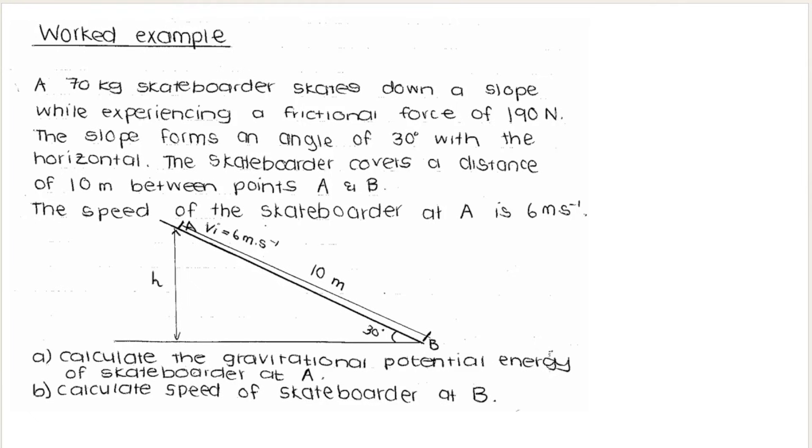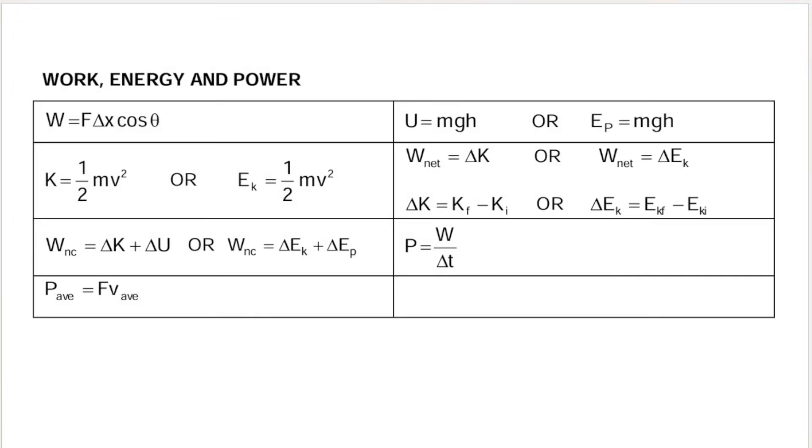Calculate the gravitational potential energy of the skateboarder at A. Now, if they ask you a question that is straightforward, as straightforward as calculate the gravitational potential energy, I want you for a second to look at your formula sheet with me. You should know that to calculate gravitational potential energy, we need to use this formula over here. Your teacher might, instead of EP, use the symbol U. It's the same formula, essentially.